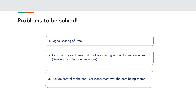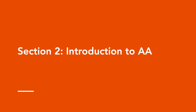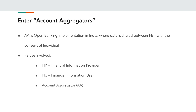Let's see what problems need to be solved in the Indian ecosystem. First is to ensure digital sharing of data, especially the income data of an individual. Second is to have a common digital framework that connects not just financial institutions but also taxes, pension funds, depositories, etc. Finally, the consumer should have control over what data is being shared and to whom it is being shared. That's when we have account aggregators — India's own implementation of open banking — where data is shared between financial institutions only with the consent of the individual.